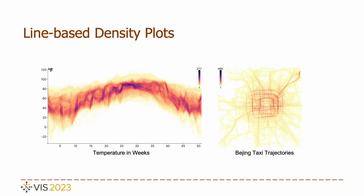However, line-based density plots do have their challenges. For instance, take a look at the temperature data on the left. In the highlighted area, you will notice a zigzag pattern that can make it difficult to discern the exact path of the lines. Similarly, in the taxi trajectory data on the right, we primarily observe high density patterns around the city main roads. This might give the impression of numerous taxis circling around the city center.